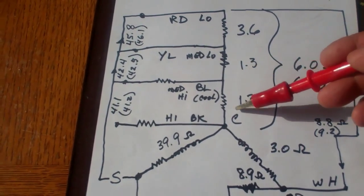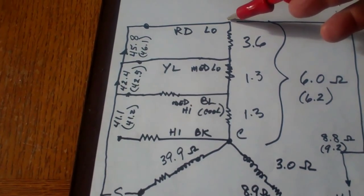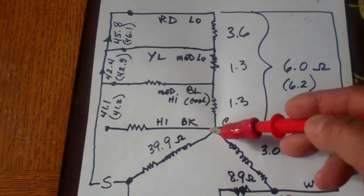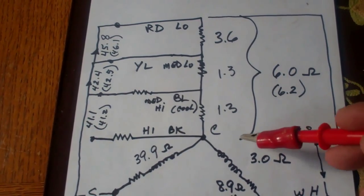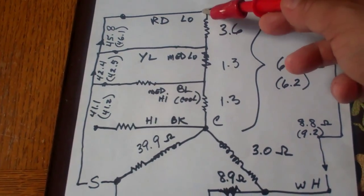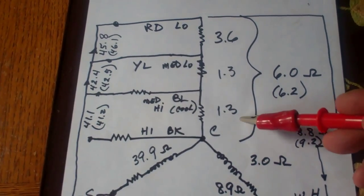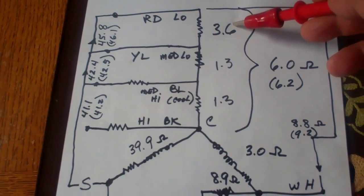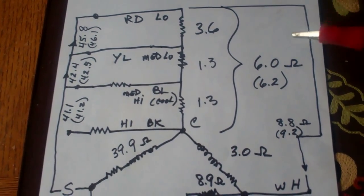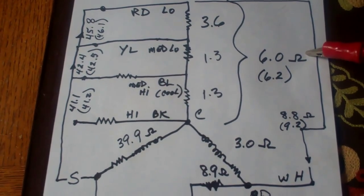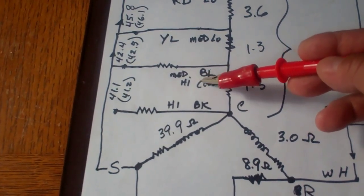Now that you've ohmed out the resistance for each individual segment, you can see that it makes sense now. If you take a measurement for instance from red to black, you should get the sum of each of these segments. So in this case, from red to black, we would be looking for 6.2, that would be the sum of these three. And what I actually got was 6.0, which is close enough. That's right in the ballpark. That's what we're looking for.